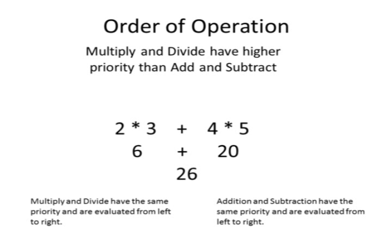2 times 3 is evaluated to 6. 4 times 5 is evaluated to 20. And then we'll get around to doing the addition, add 6 plus 20, and the answer is 26.